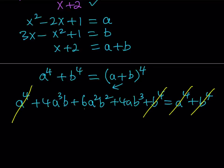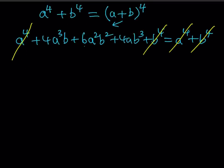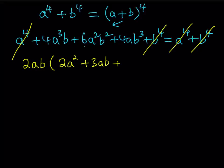The a⁴ and b⁴ terms cancel, leaving 0 on one side. We can factor the remaining expression; the common factor is 2ab, giving us 2ab times (2a² + 3ab + 2b²) equals 0.